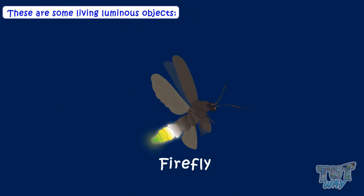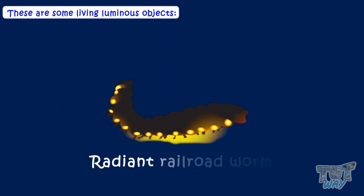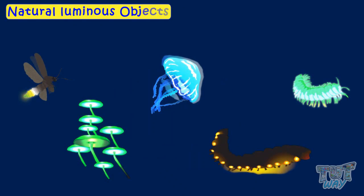Here are some examples of living luminous objects: fireflies, jellyfish, flashy fungus, radiant railroad, glowing millipedes. These are natural luminous objects. They glow and emit light on their own.